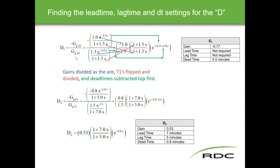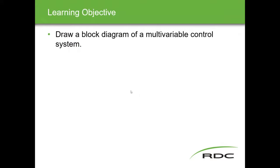The D1 formula is this formula, and the D2 formula is this one. The only difference is the combination of process variables and controllers used. For D2: 0.8 over 1.5 for gain, and the T1 values crisscross — one plus seven on top, one plus five on bottom — then 2.8 minus 2.0 for dead time. The gain is 0.53, the lead time is the top T1 value, lag time is the bottom T1 value, and dead time is that calculated value. These settings go into decoupler one and decoupler two.